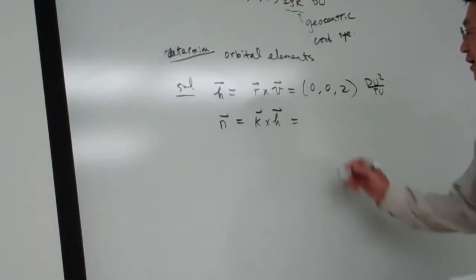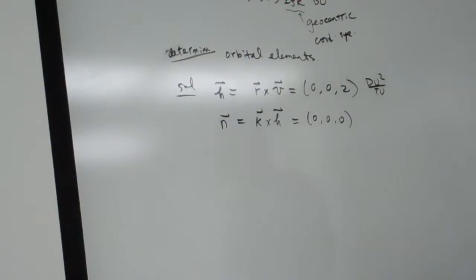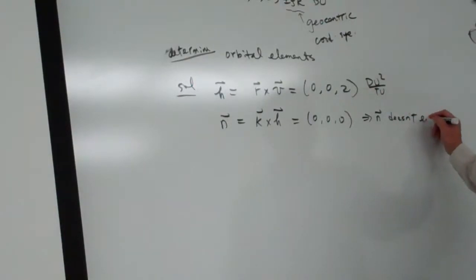So for this case, basically it's 0, 0, 0, nothing. Okay, that means n does not exist.